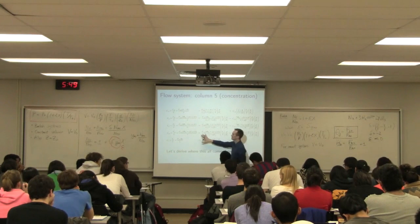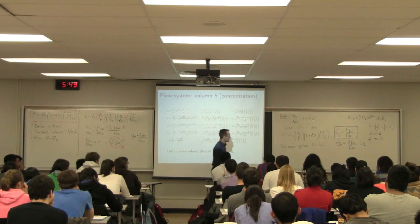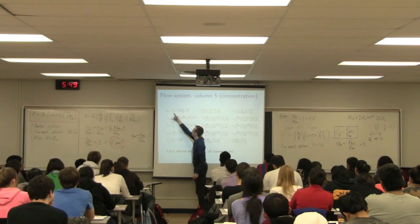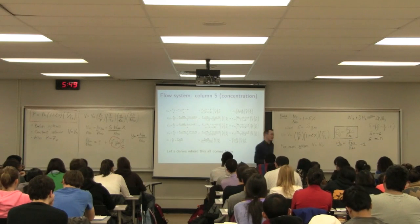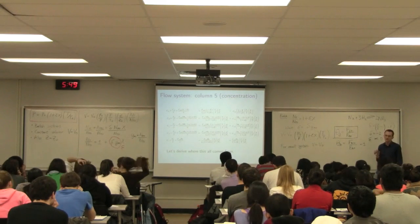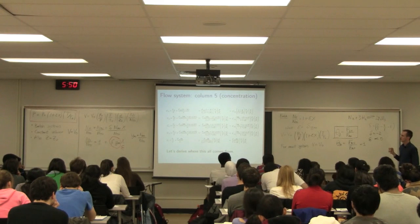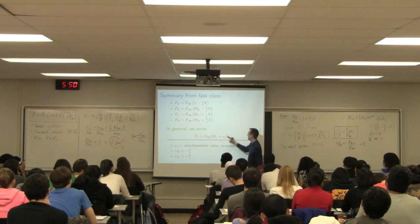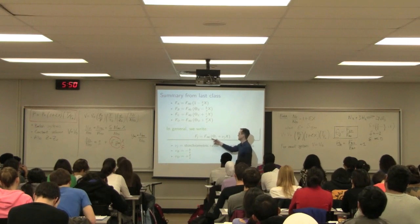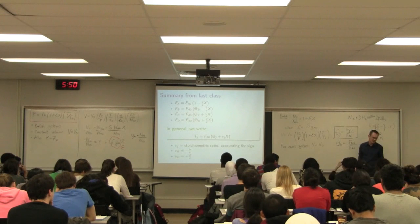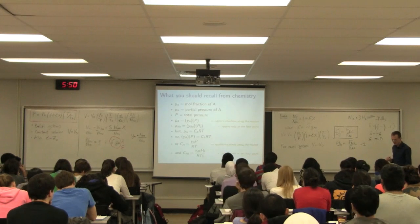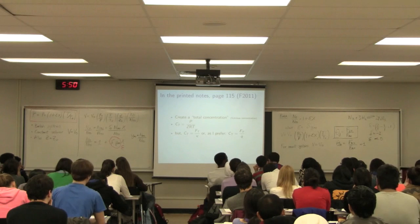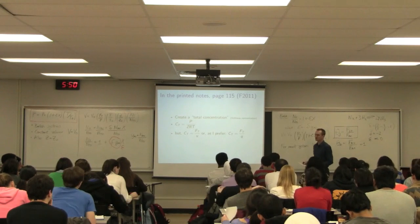We're going to end up with this starting from the basic definition that concentration C_A equals F_A divided by volumetric flow v. We're going to substitute each of the numerator and denominator with more complex terms. Here's the term for A: F_A equals Fₐ₀(θ_A + ν_A × X). For B: F_B equals Fₐ₀(θ_B + ν_B × X). That takes care of my numerator. Now let's take care of the denominator v.